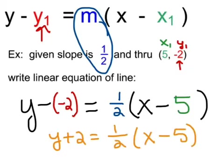So the final answer would be y plus 2 equals 1 half times the quantity x minus 5. We don't do the distributive property, because it said write it in point slope form. This is called point slope form, because we're able to plug in a point in the slope, and we're done.